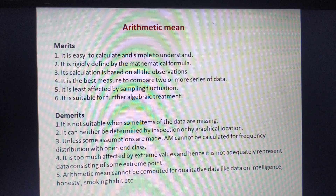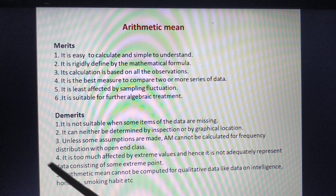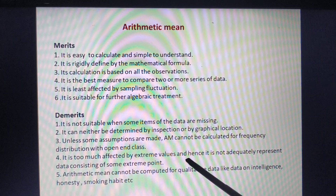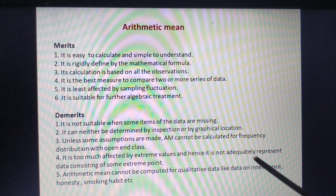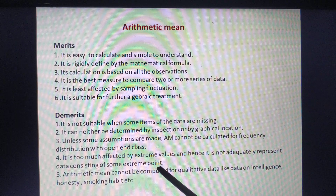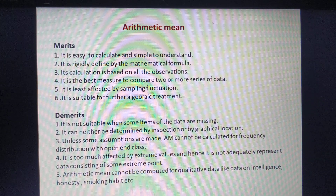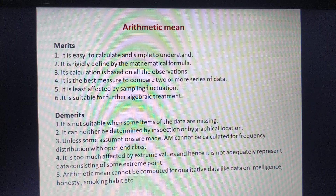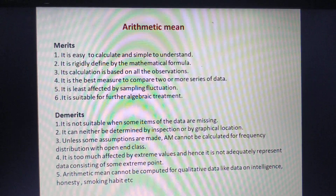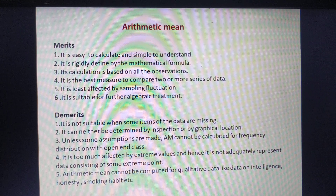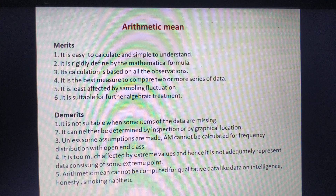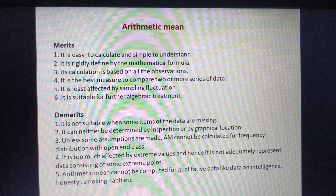The fourth demerit is that it is too much affected by extreme values and hence does not adequately represent data containing extreme values. For instance, in exams, if you score above 90 in most subjects but score only 30 or 40 in one subject, your average will be heavily affected.